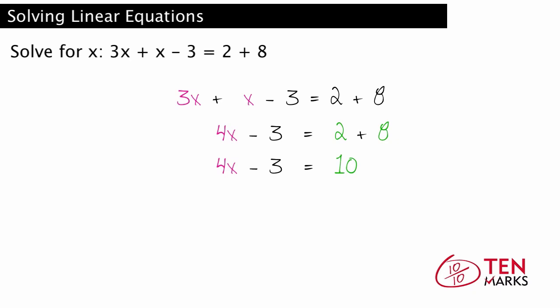The x is first multiplied by 4, then 3 is subtracted. You undo these in reverse. Add 3 to both sides to undo subtraction. This gives you 4x equals 13. Now undo multiplication by dividing by 4, which gives x equals 13 over 4, the solution to the problem.